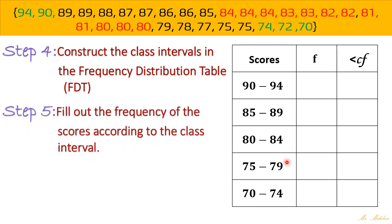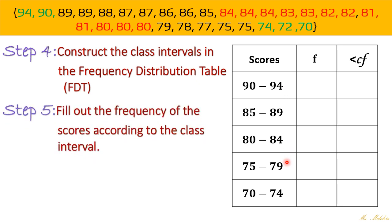Okay, next is fill out the frequency of the scores according to the class interval. So how are we going to fill out or fill in this frequency column? So you just simply count how many scores lies within the given class interval. So let's say, let's start with 70 to 74. I highlighted it already here so that you can easily check this one. So 70, 70 to 74. We do have 3.